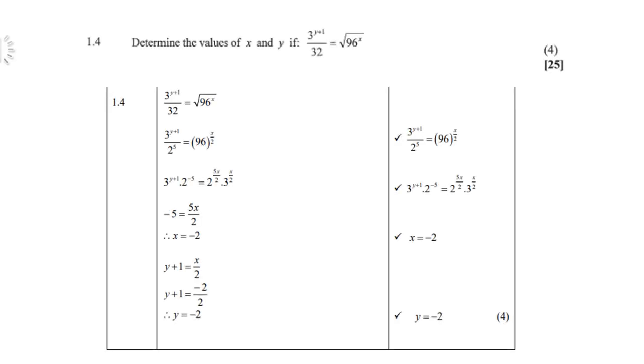And let's look at the following example. Determine the values of x and y if 3^(y+1)/32 = ∛(96^x). So the first step is to use prime numbers: like 32 is 2^5 and the 96 is of course 2^5 times 3. 2^5 times 3, so please take note of that.